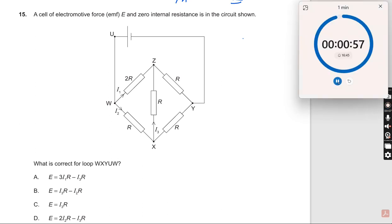A cell of EMF E and zero internal resistance is shown as switched in the circuit. What is the correct loop for WXYUW?